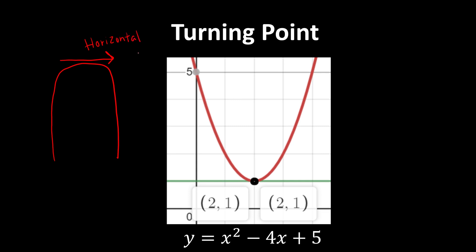When the car is horizontal, we can say that the gradient is 0, because a horizontal line has a gradient of 0. So when we want to find the turning point, we just need to find which point on the curve has a gradient of 0.